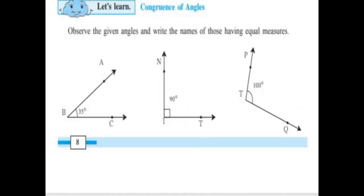Congruence of Angles. Observe the given angles and write the names of those having equal measures. You have to observe all the given angles and write which angles are congruent.